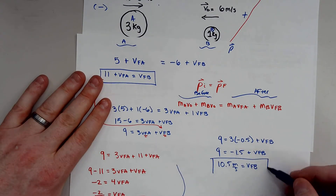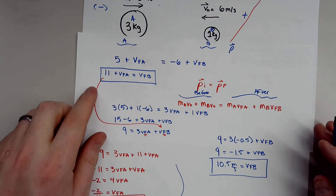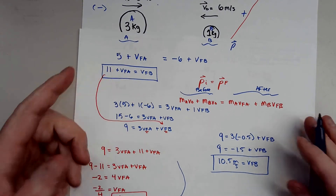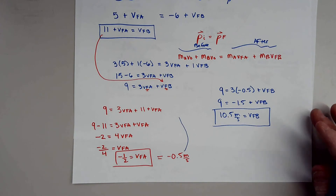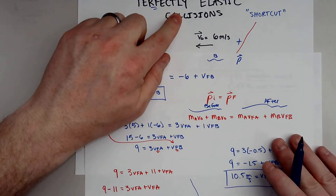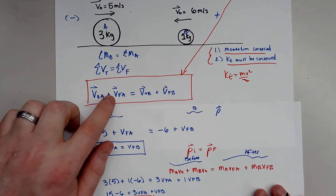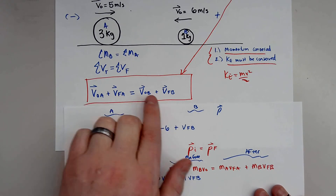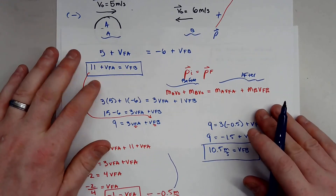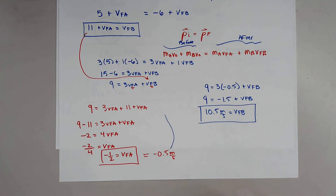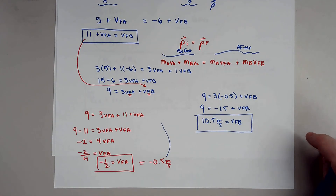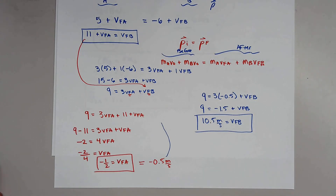So those are the final answers. You can verify by plugging back in — 11 minus 0.5 is still 10.5 meters per second, which checks out. This is how you do a perfectly elastic collision using the shortcut method. Remember: velocity initial of A plus velocity final of A equals velocity initial of B plus velocity final of B. Then plug into your momentum equation to solve. I hope this video helps — give me a thumbs up and subscribe for more physics content. Thank you all, have a great day.